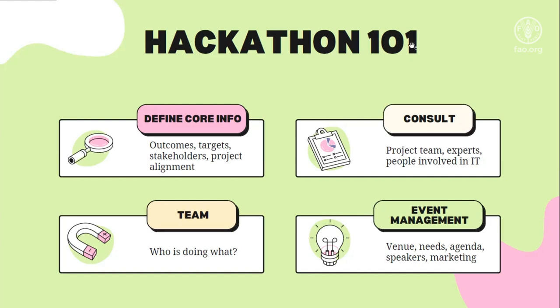The third step is having your team. First, you should understand which organization is responsible for what — for us it was FAO and UNFPA, so we divided activities between us. Our event was also co-hosted by national partners including the Ministry of Agriculture and Ministry of IT, so we had a split of responsibilities. The second part is to determine who is doing what within each team — for example, one person would be responsible for applications, the other for event management.